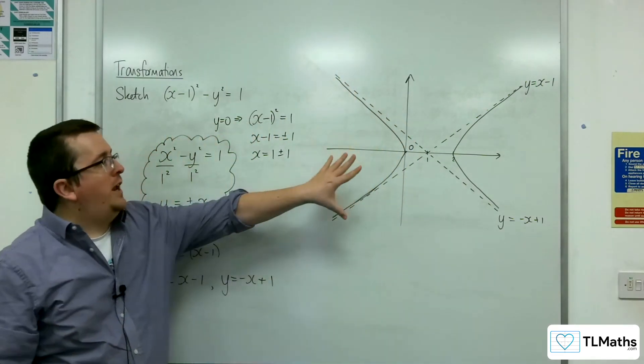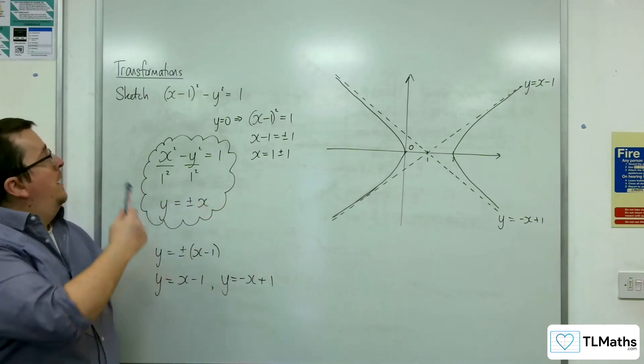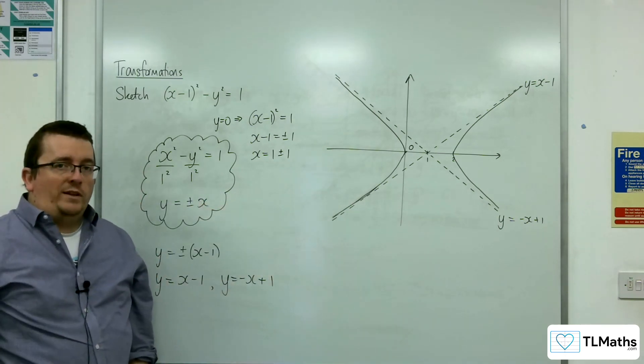And so that is the shape of the curve x take away 1 squared, take away y squared equals 1.